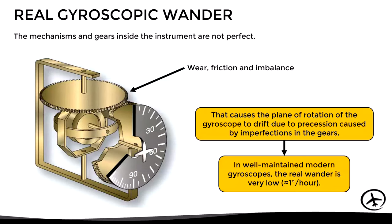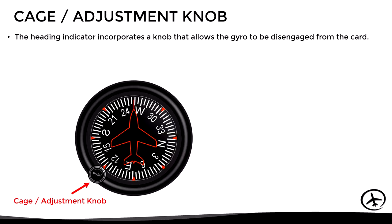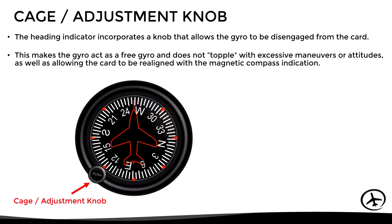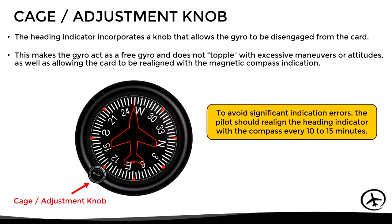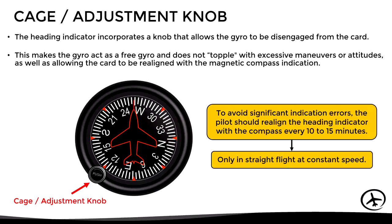To correct for both real and apparent wander, we use the cage and adjustment knob. This disengages the gyro from the card, making it act as a free gyro, preventing toppling with excessive maneuvers, and allowing the card to be realigned with the magnetic compass indication. As a general rule, the pilot should realign the heading indicator with the compass every 10 to 15 minutes during flight. This adjustment should only be made when flying straight and level at a constant speed, as this is the only situation in which the compass indicates the heading correctly.